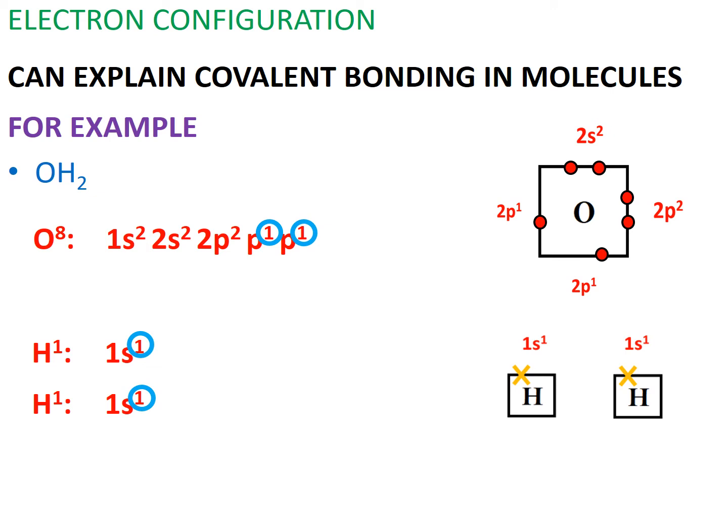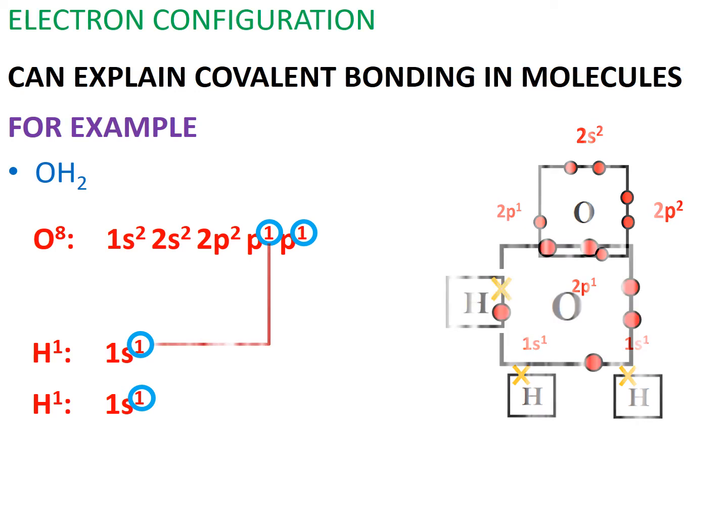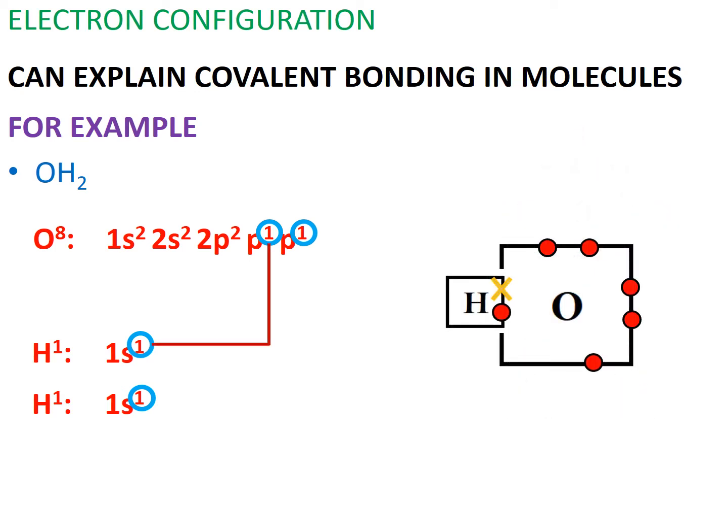One of the hydrogen's 1s electron pairs up with an unpaired electron in oxygen to form the first covalent bond. The second hydrogen, with its unpaired electron in its 1s orbital, pairs up with the other unpaired electron in oxygen to form the second covalent bond, giving us a complete dot-cross diagram of water.